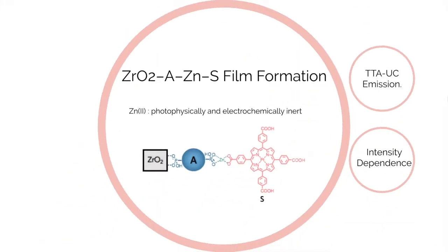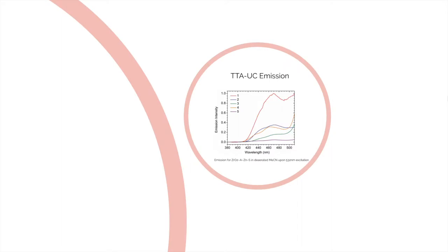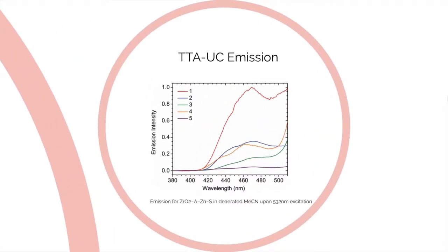The bilayer film was prepared by soaking the zirconium dioxide film into acceptor, then zinc linking ion, then sensitizer molecule solution. Each step is monitored by UV-Vis or ATR-IR spectroscopy. Zinc was chosen as a metal linking ion because it is photophysically and electrochemically inert under the measurement conditions applied here. Bilayer samples for emission measurements were prepared in the glovebox following a previously published procedure.